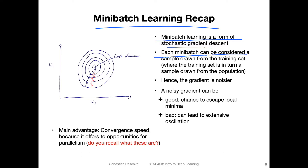Each mini batch can be considered as a sample drawn from the training set, where the training set itself is in turn a sample drawn from a population. So the training set is just what we have access to, like a sample from a distribution that we train on. During mini batch learning, we use sub-samples or smaller samples — each mini batch is a sample of the training set, which itself is a sample. And then we do the forward and backward pass on each mini batch.